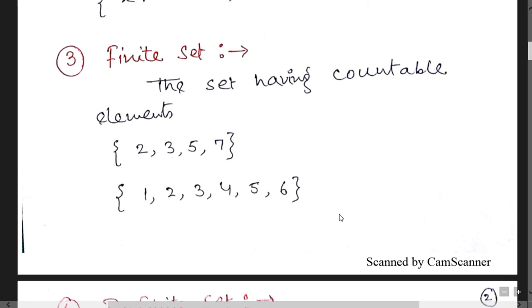Third category is finite. What is the meaning of finite? Basically if you count the number of elements of the set, then it is called finite.